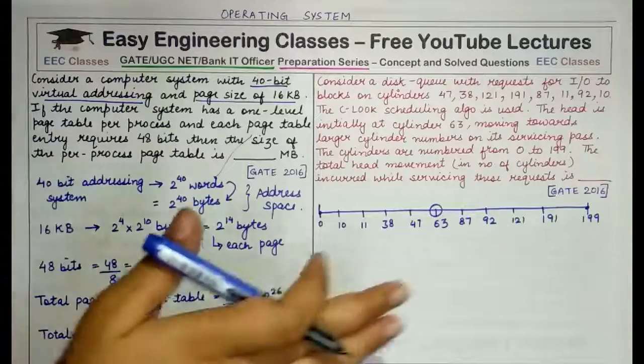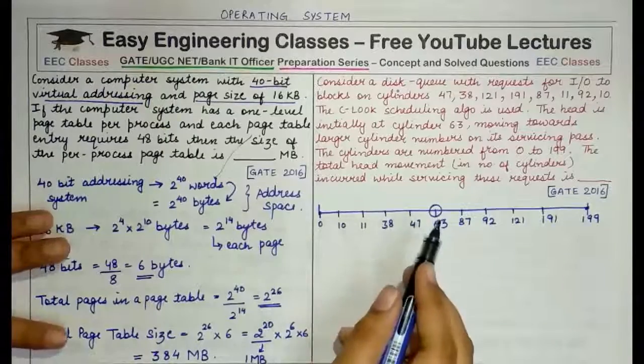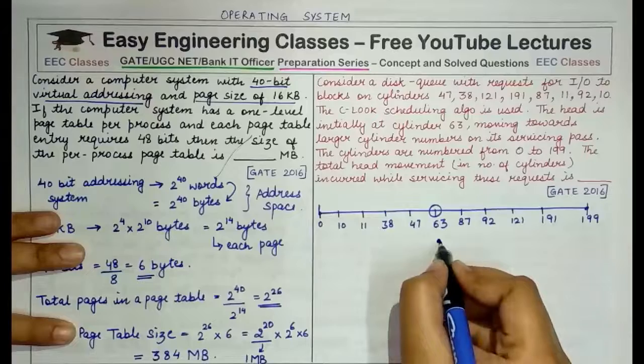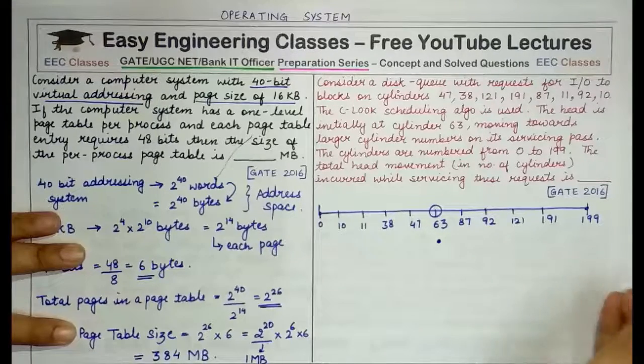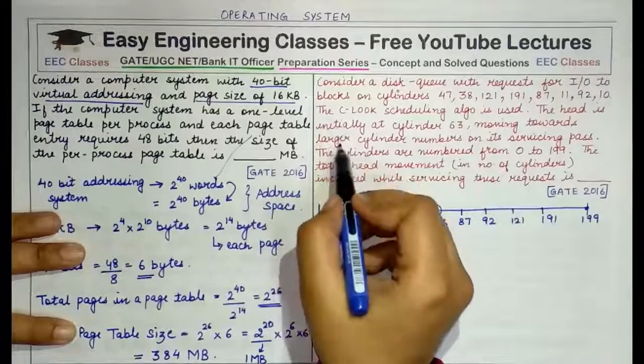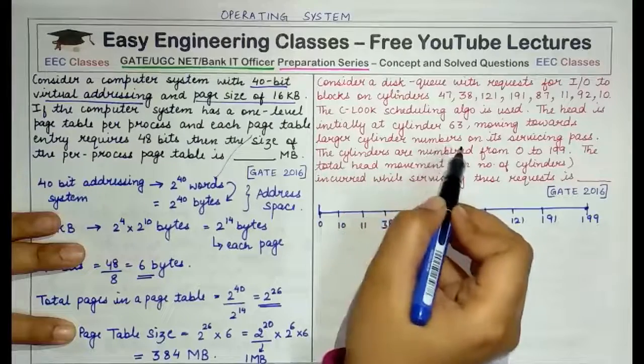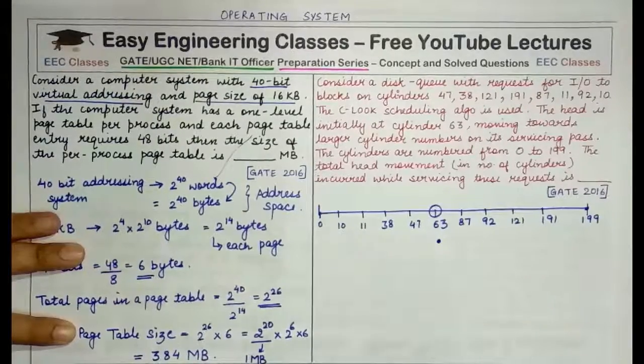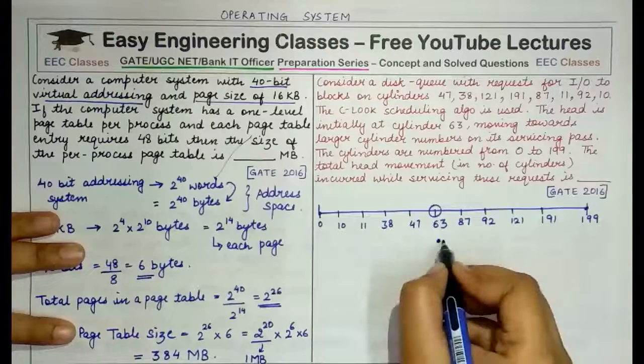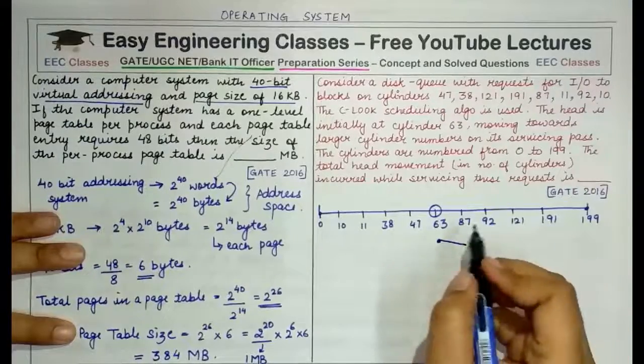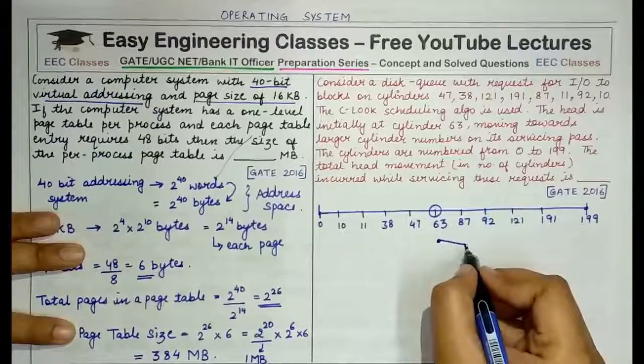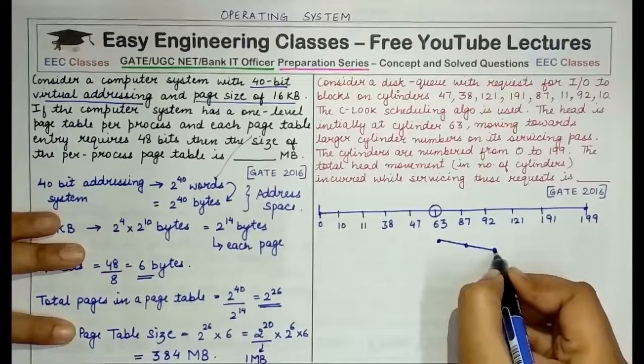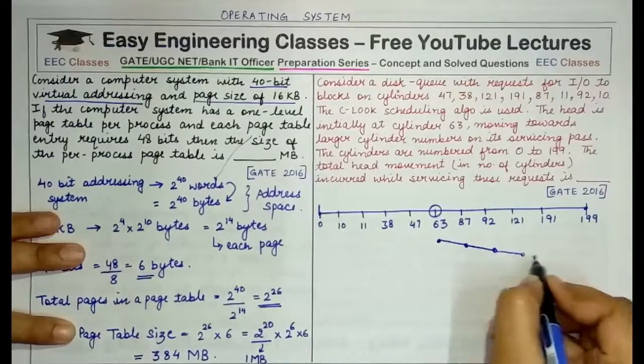Let's start with this question and start servicing all the requests one by one and find out what will be the total time incurred and the total head movement in servicing all these requests. We start from 63. Next, the cylinder moves towards the larger numbered cylinders, so it would move towards right. This line that the cylinder is moving from 63 to larger cylinder numbers tells you the initial direction of the head movement and in what direction it will always function. So it starts at 63, it moves towards right, towards 87 because the first request that lies in its way to right is 87. It will service this request. Then after servicing 87, it proceeds right, goes to 92, then 121 and then 191.